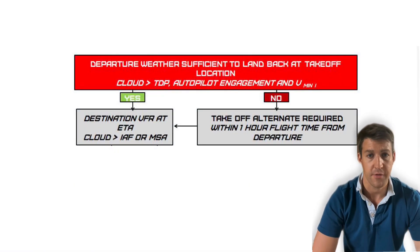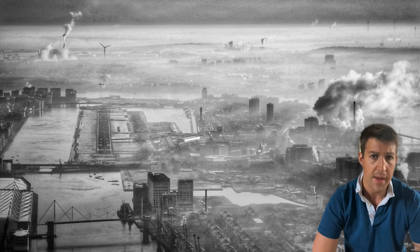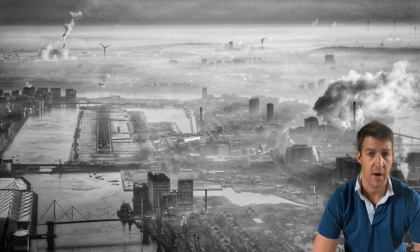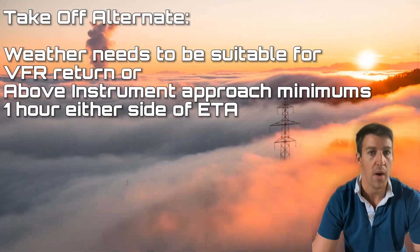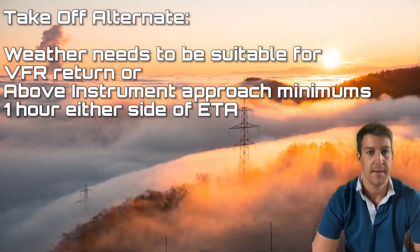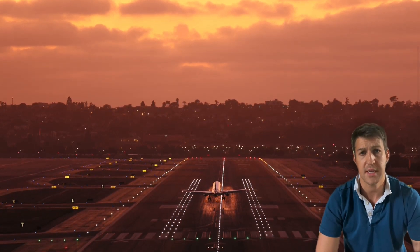If either of these answers is no, then you need to find a takeoff alternate within one hour's flight time from the departure location where the weather is either sufficient for a VFR approach, or the weather is above the instrument approach minimums for one hour either side of your ETA back at this takeoff alternate. If you're on a short flight and your destination is only an hour away, then your destination can serve as your takeoff alternate.